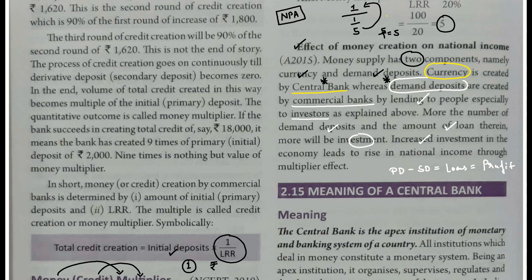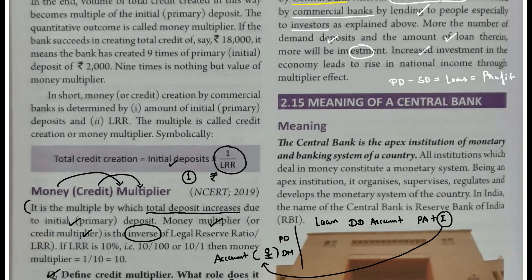Bank kyunki multiple stages par paisa create karna jaanta hai, sirf ek person ke deposit se, isliye kaha jaata hai - commercial banks create money, they are involved in credit creation or money creation, not just at one stage but at multiple stages. Isliye ise credit creation ya money creation nahi, balki credit multiplier aur money multiplier kehte hain - isko multiplier effect bhi bolte hain. Primary deposit ki wajah se itna kuch bank bana paate hain - isi ko hum multiplier effect kehte hain. Is topic mein multiplier effect add kar lo - credit aur money multiplier ke saath. Thank you very much.